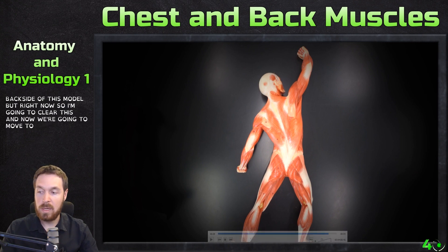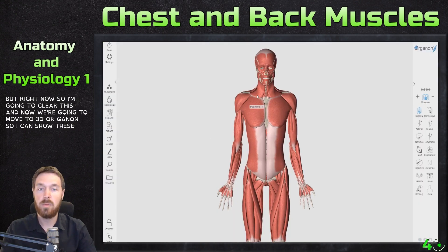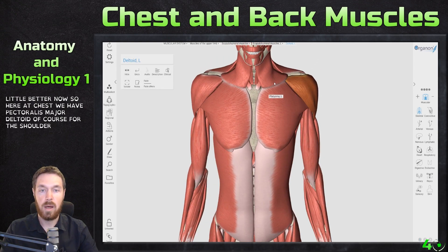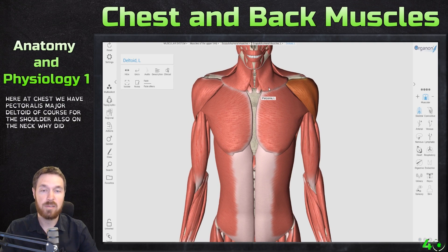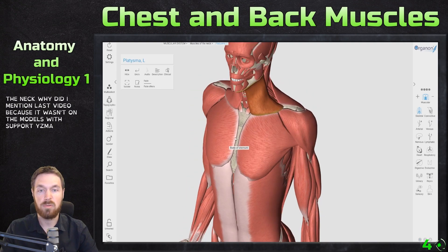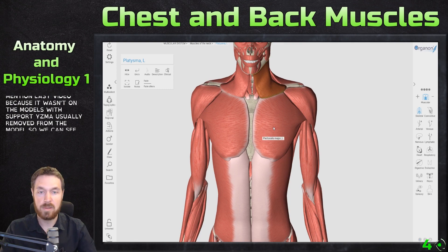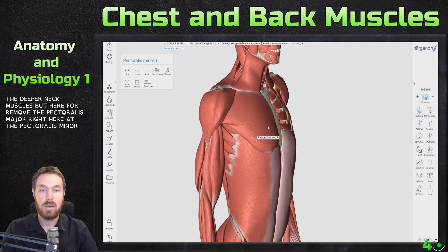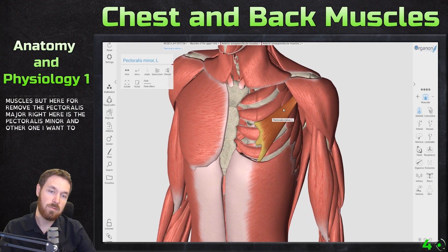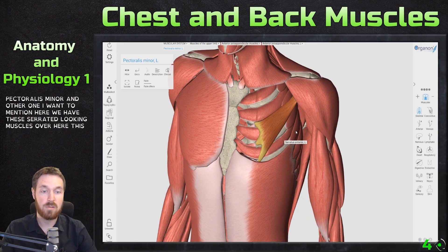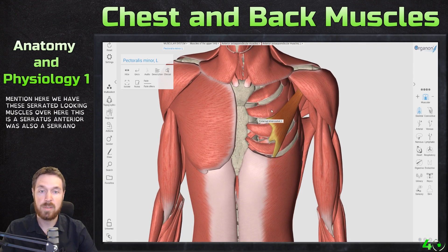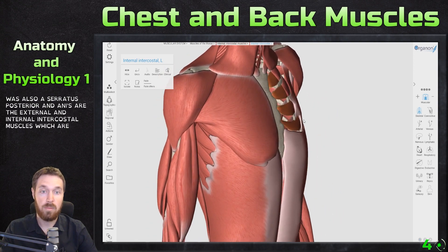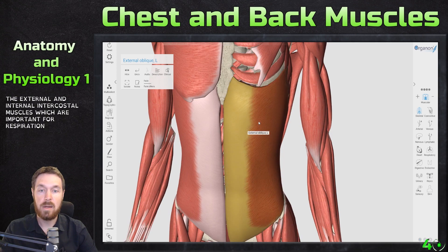In 3D Organon, on the chest we have the pectoralis major and the deltoid for the shoulder. Also on the neck — which I didn't mention last video because it wasn't on the models — is the platysma, usually removed from the model so we can see the deeper neck muscles. If we remove the pectoralis major, right here is the pectoralis minor. Another one to mention: these serrated-looking muscles are the serratus anterior. There's also a serratus posterior, and these are the external and internal intercostal muscles, which are important for respiration.